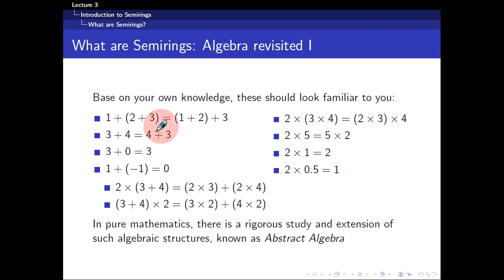One plus two plus three is equivalent to adding one and two, and then adding three. Now, all these things, to most people, they take it for granted. But for mathematicians, especially in pure mathematics, there is a rigorous study, an extension of such an algebraic structure, and this is known as an abstract algebra.